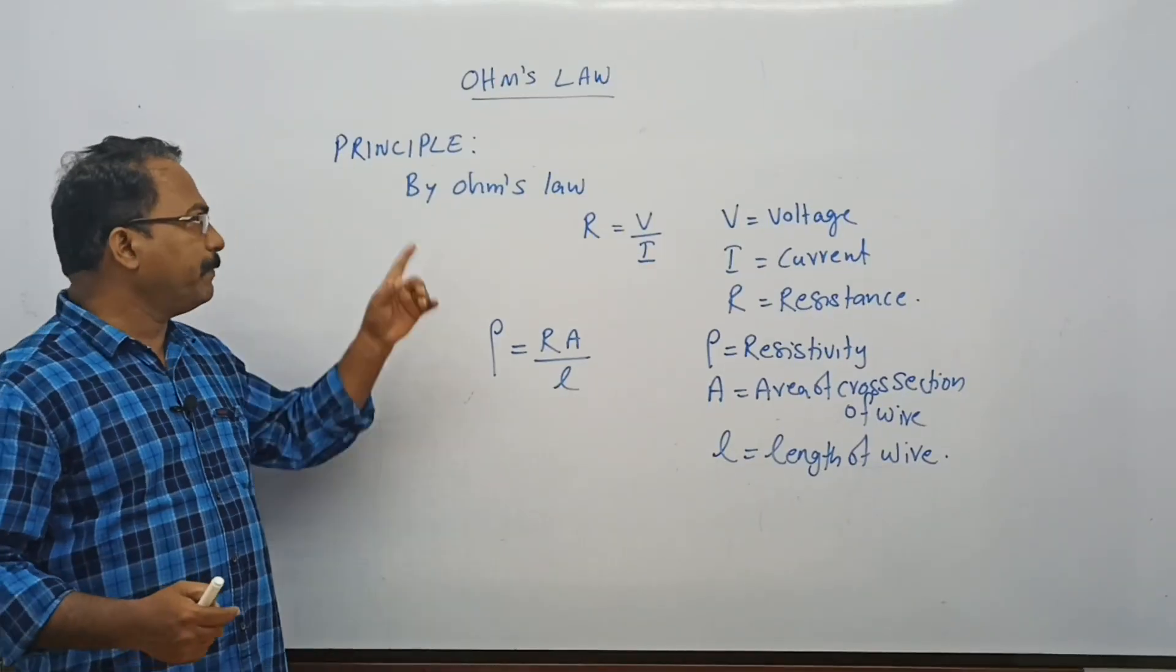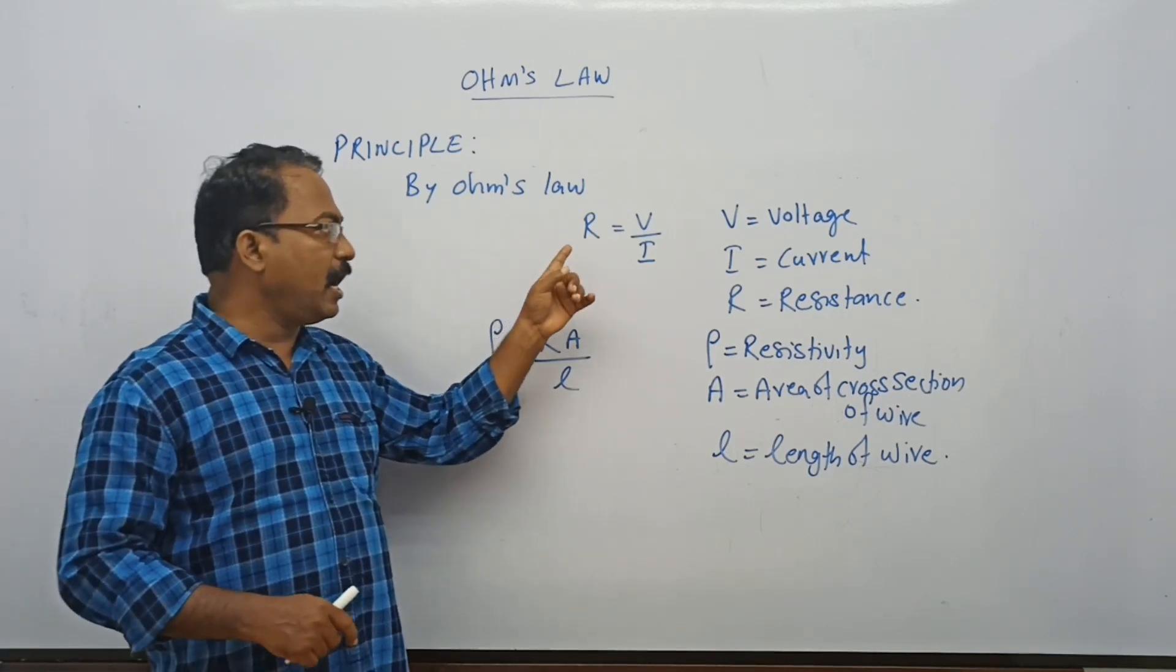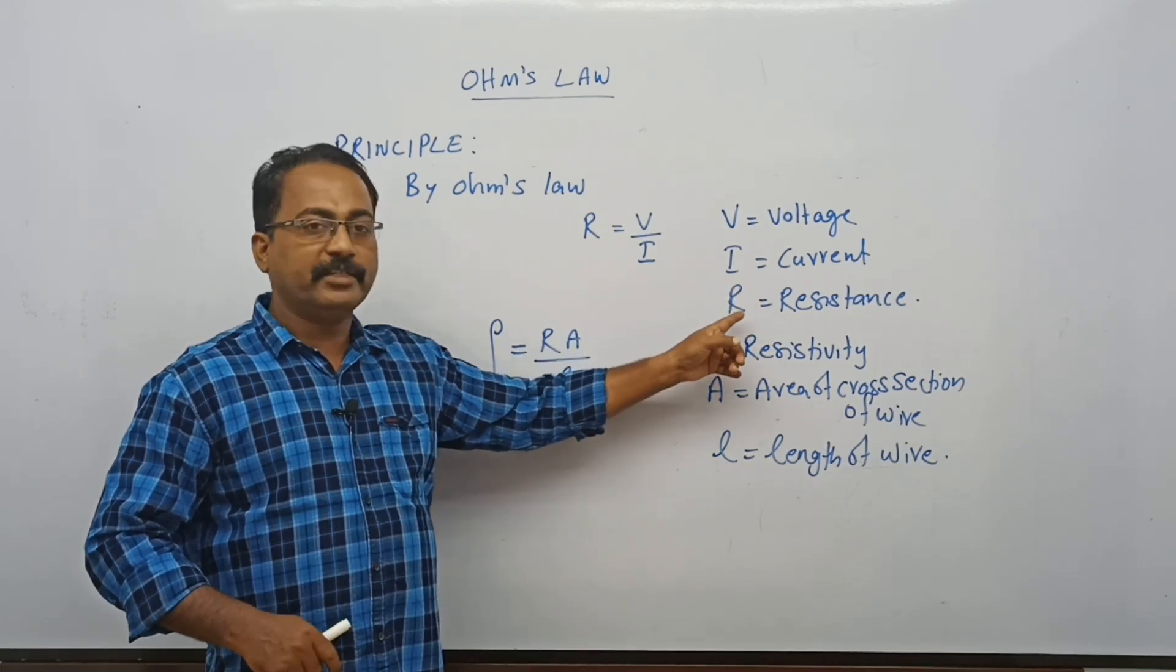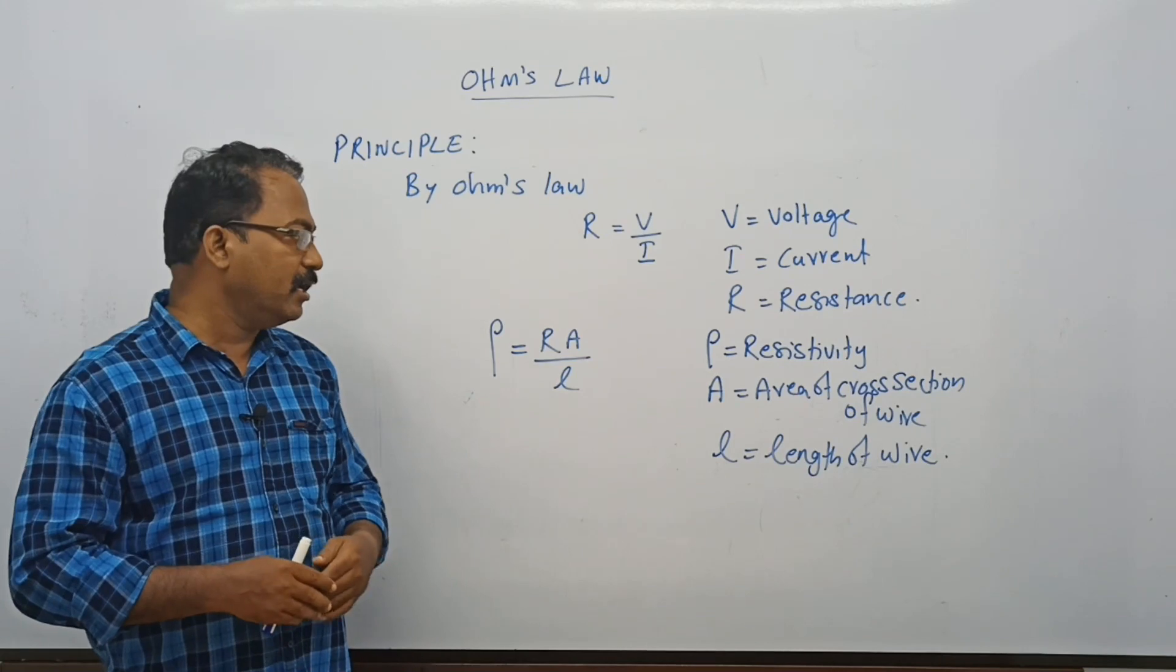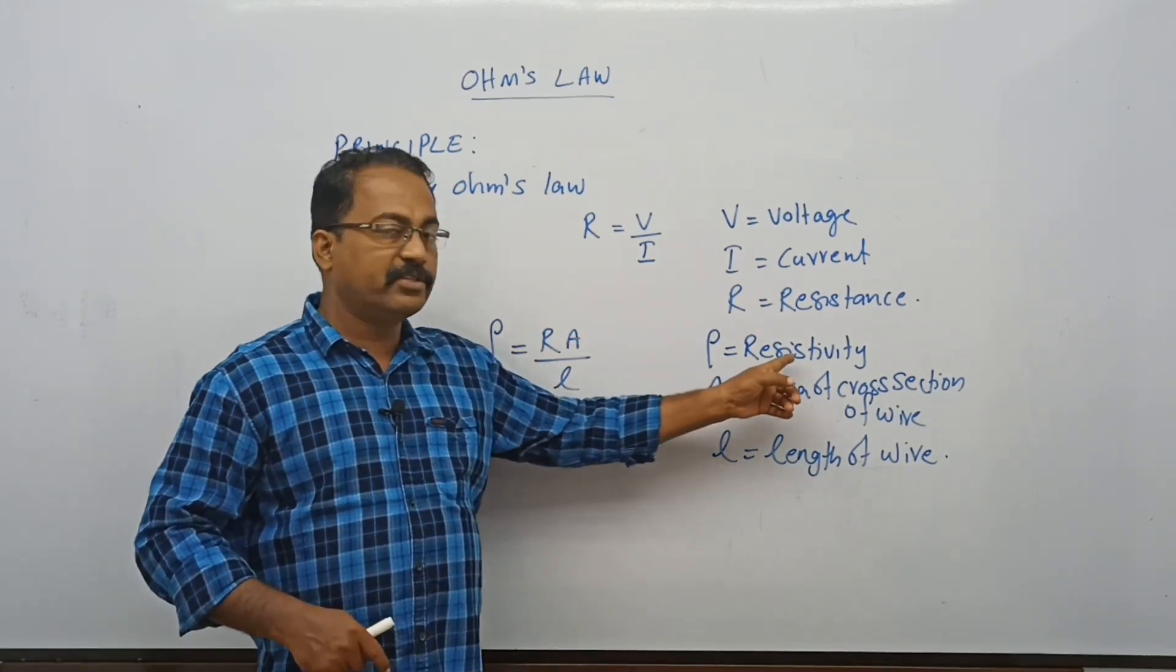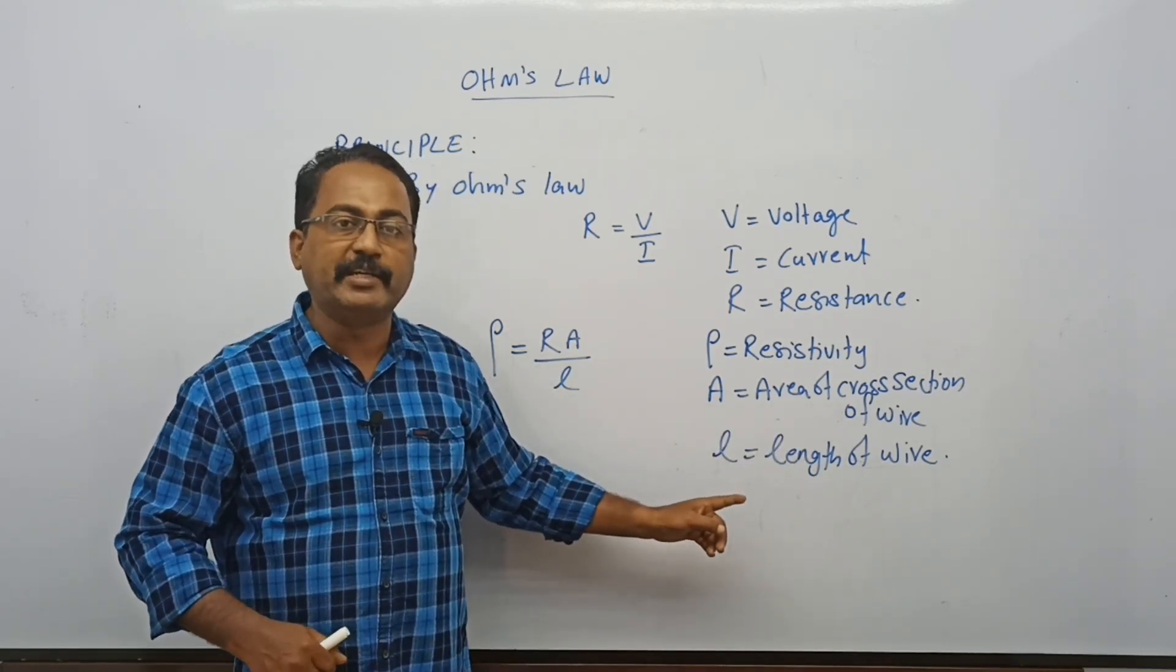Now let us see the principle behind this experiment. By Ohm's law we know that R = V/I where V is the voltage, I is the current, and R is the resistance. The equation for resistivity of the material is ρ = RA/L in which ρ is the resistivity, A is the area of cross section, and L is the length of the wire.